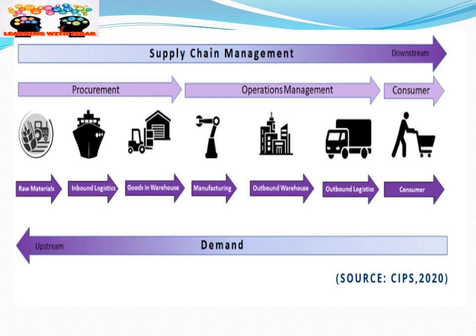Looking at this picture, it shows the total line of Supply Chain Management flowing from upstream to downstream. In the middle stream, where we convert raw materials or services into finished products, is Operations Management. This picture from APICS shows that one of the major dominant parts of Supply Chain Management is Operations Management.